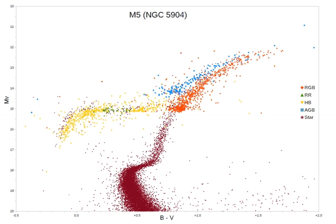Globular cluster CMDs generally show horizontal branches that have a prominent gap in the HB. This gap in the CMD incorrectly suggests that the cluster has no stars in this region. The gap occurs at the instability strip, where many pulsating stars are found. These pulsating horizontal branch stars are known as RR Lyrae variable stars and they are obviously variable in brightness with periods of up to 1.2 days.